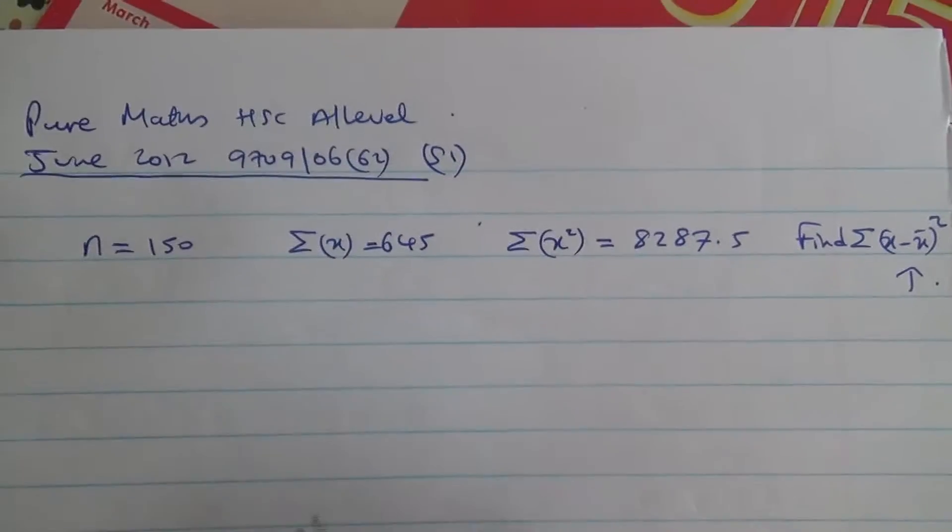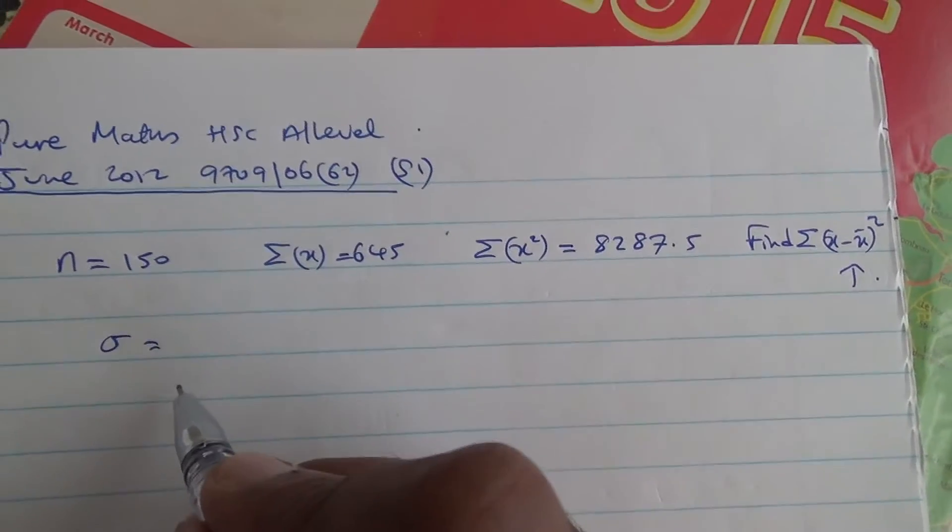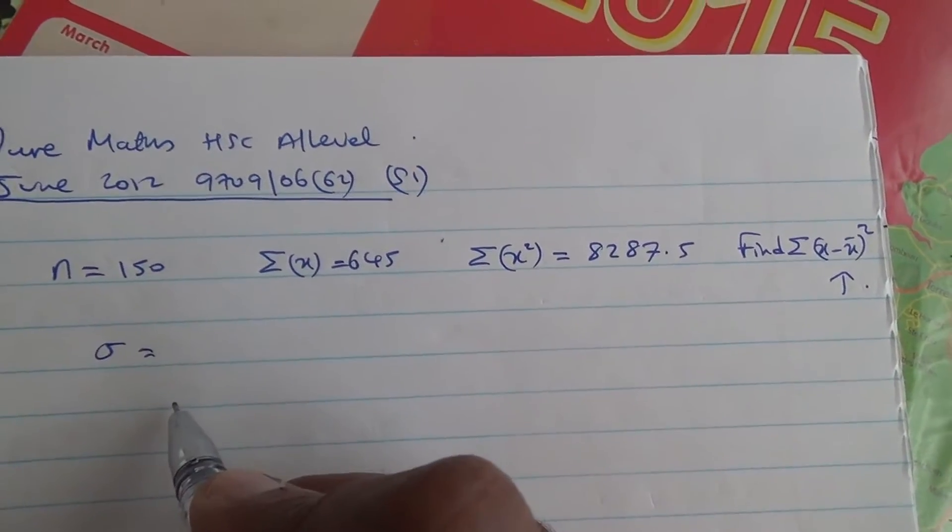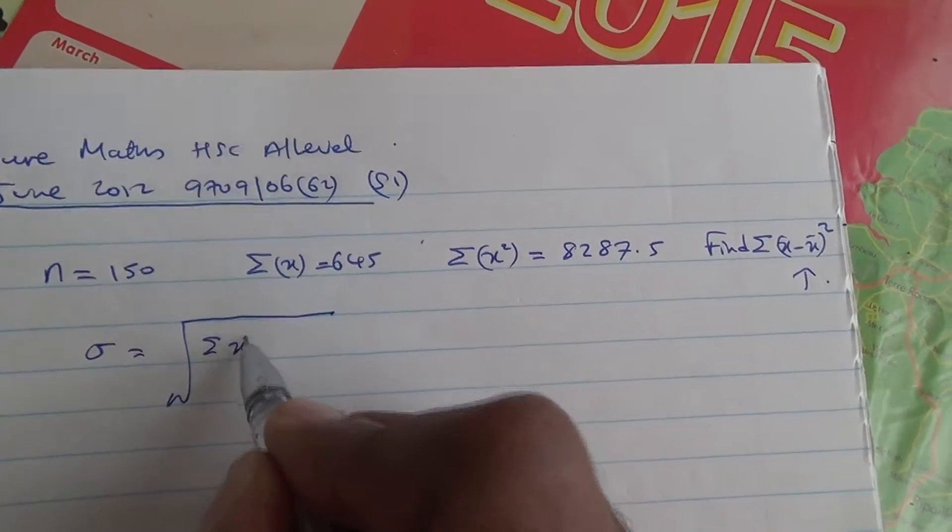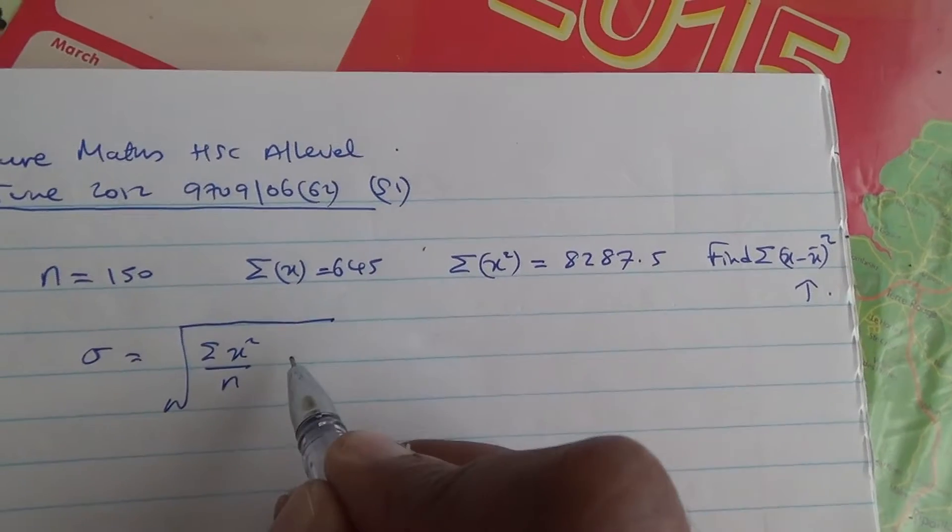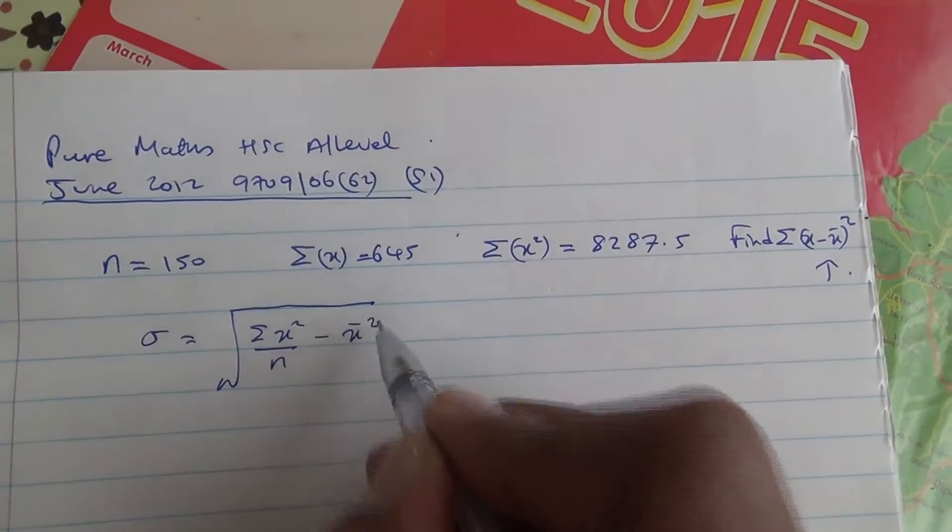Now, first of all, we need to realize that the formula to find the standard deviation for this distribution is going to be root of summation of x squared over n, where n represents the sample size, minus the mean of x to the square.